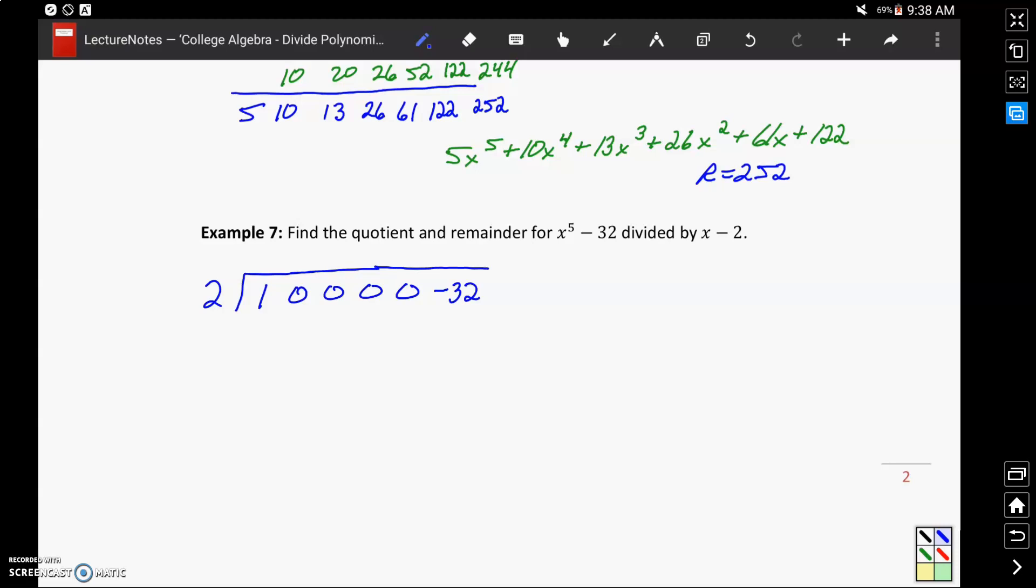So we did essentially what we did in the previous example, dropped in those placeholder zeros, but without rewriting the original polynomial. We'll drop down that first coefficient and then begin that multiplication and addition process.